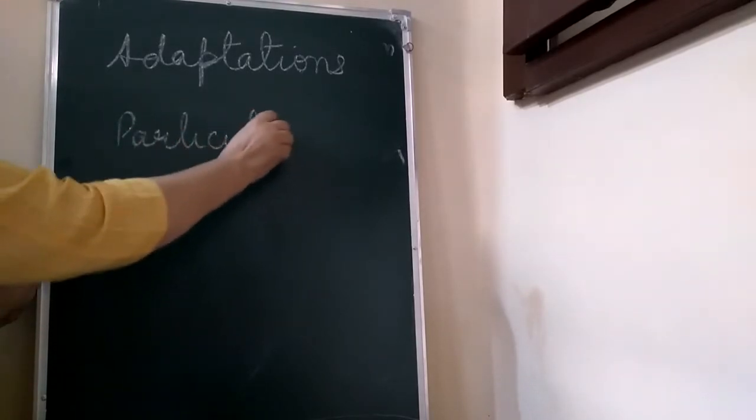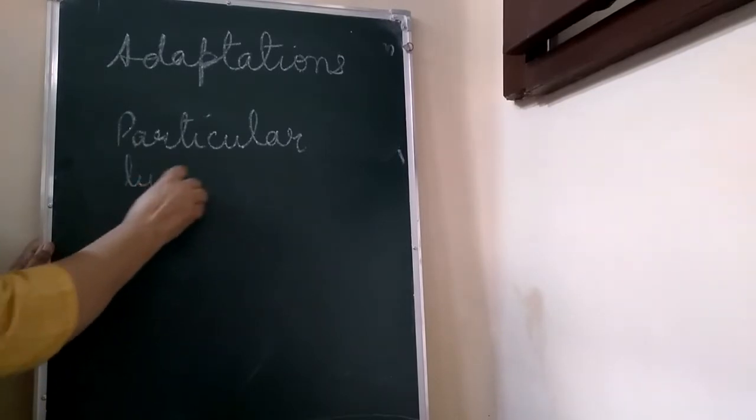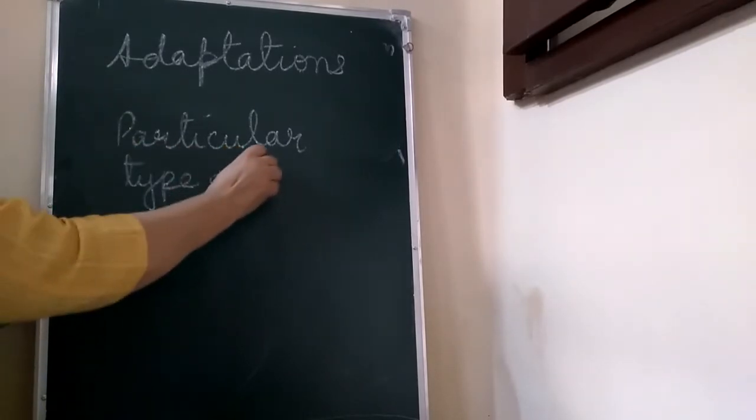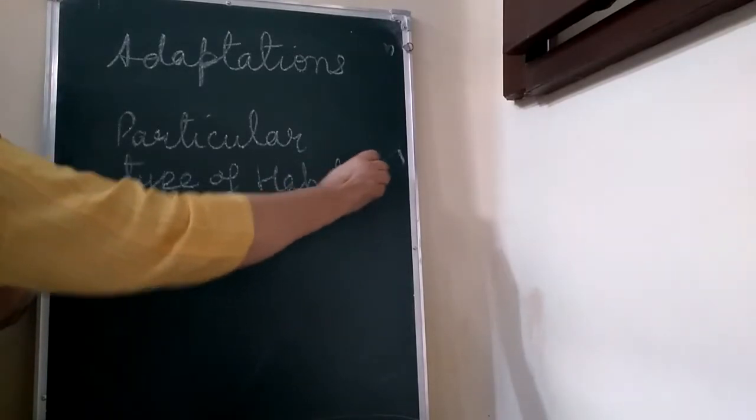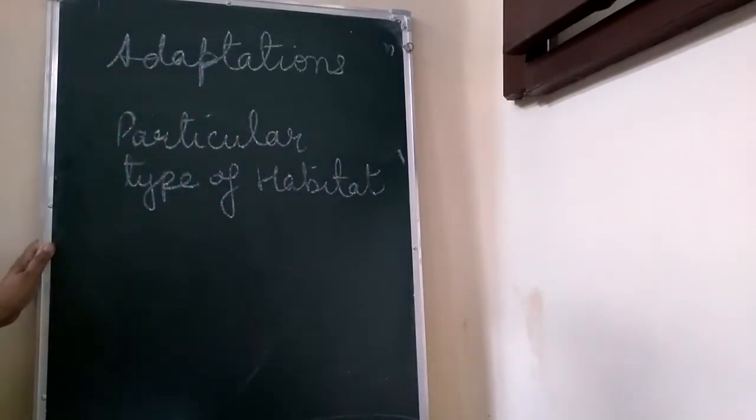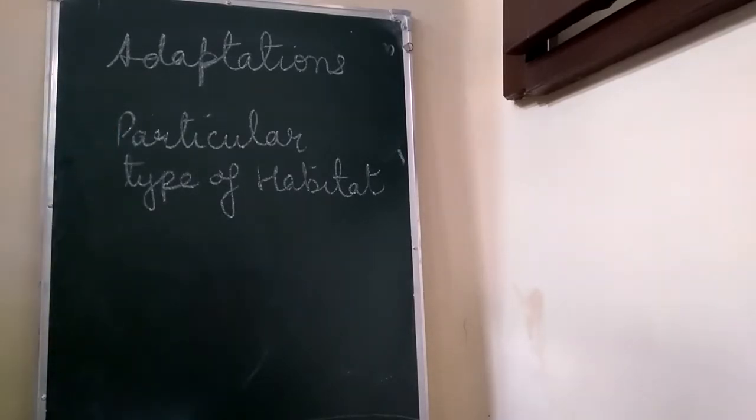type of habitat, in a particular type of habitat. These are known as adaptations. For example, the gills of a fish is an adaptation that helps it to survive in water.